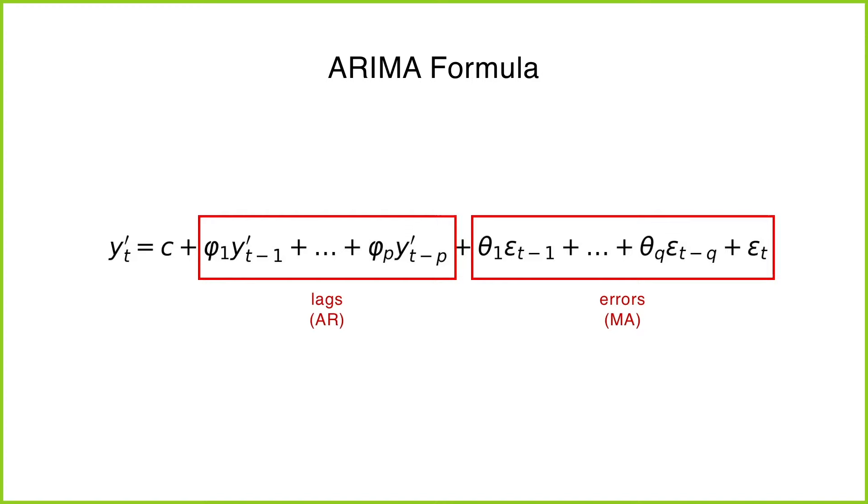An ARIMA model is characterized by three terms, and these are the most important things you need to know in order to be able to fit an ARIMA model. These are P, D, and Q.